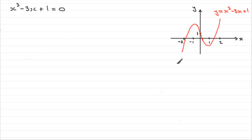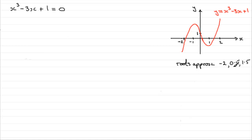The roots look approximately: the first one is round about minus 2, a little bit more than minus 2. The next one is about 0.5, and this last one about 1.5. So we've got the approximate roots. And even if I were to look at these closer, I don't think I'd be able to give them to a great deal of accuracy. So is there a better way?